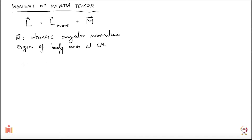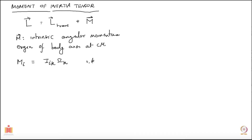We also saw that the intrinsic angular momentum M can be written in component form: the i-th component of angular momentum equals the inertia tensor component I_{ik} multiplied by the angular velocity vector ω_k, with a summation over k, where i and k both run from 1 to 3.